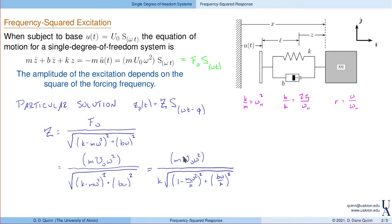As a result, this expression reduces to u naught times r squared divided by, and then the denominator is 1 minus r squared plus 2 zeta r squared. This looks a lot like what we had for our magnification factor, except now we have this additional factor of r squared in the numerator.